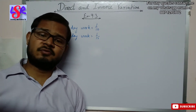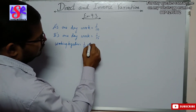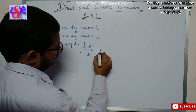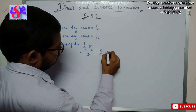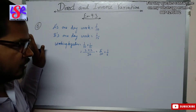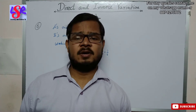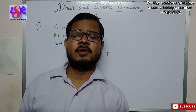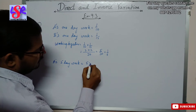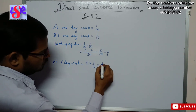They are going to work together for some days, so first we find the combined work rate. That is 1 upon 10 plus 1 upon 15, and the LCM is 30. That is 3 times and 2 times, giving 5 upon 30, which is 1 upon 6. So 1 upon 6 part of the work is completed per day when A and B work together. Now A worked alone for 5 days, so A's 5 day work equals 5 into 1 upon 10, which equals 1 upon 2.